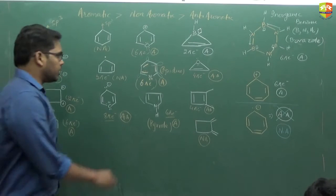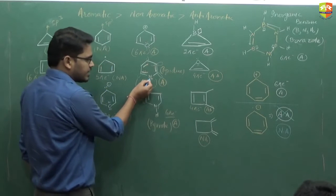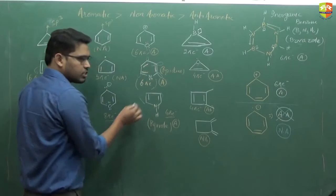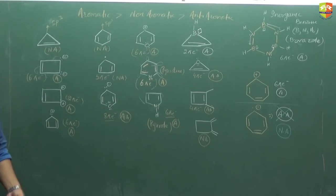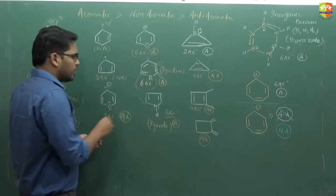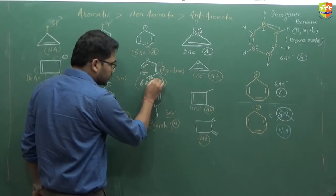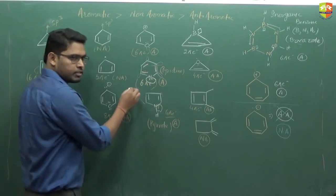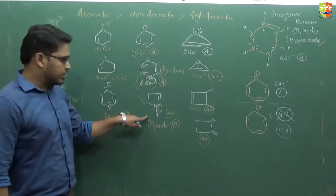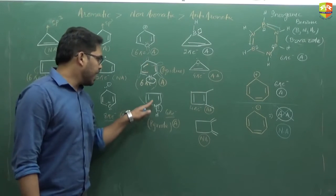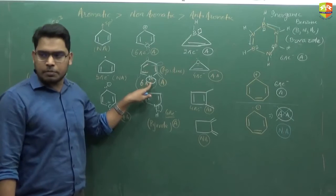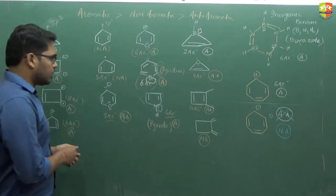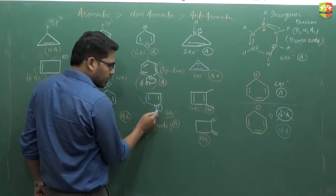One more thing: this pyridine has a lone pair available. This lone pair is in conjugation with this pi bond. In other words, this lone pair is available on the nitrogen atom but it is involved in resonance — it is delocalized. In pyrrole, this lone pair is localized, meaning present on the atom.